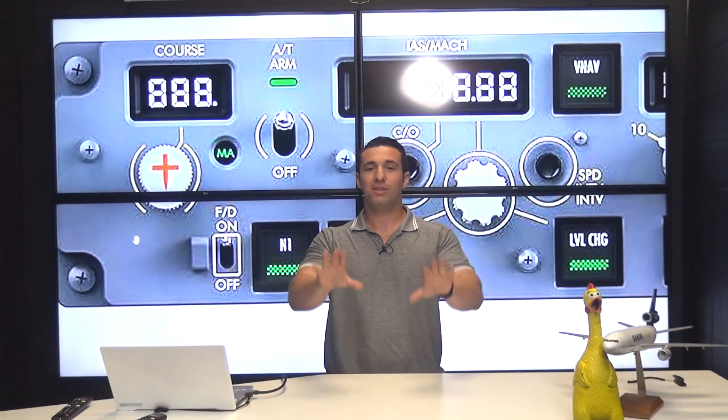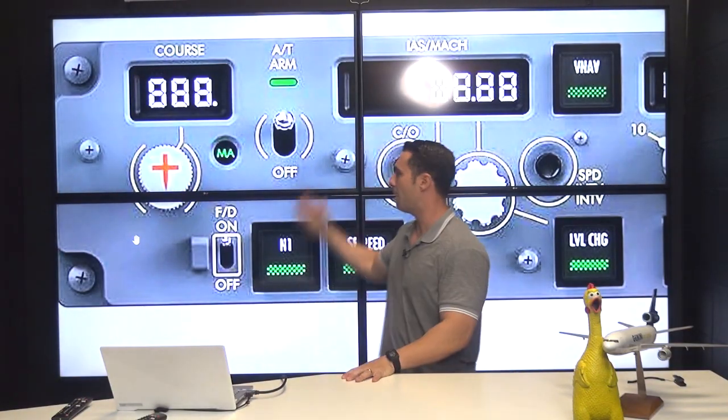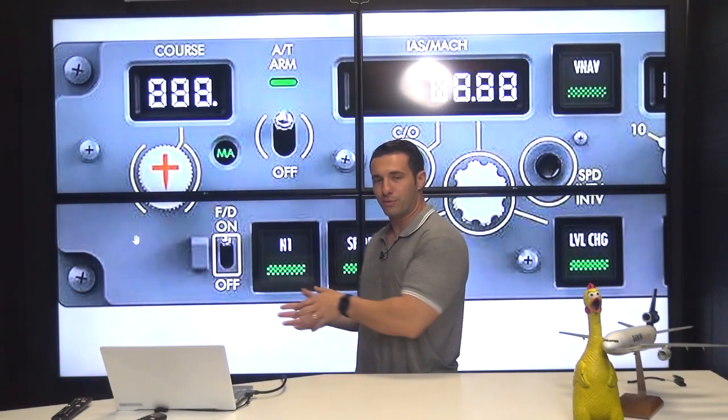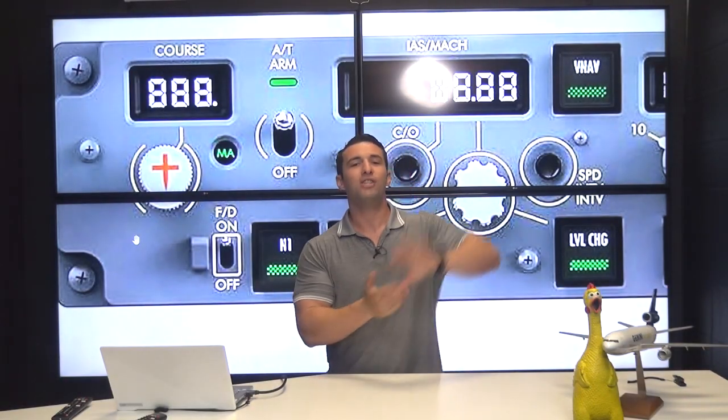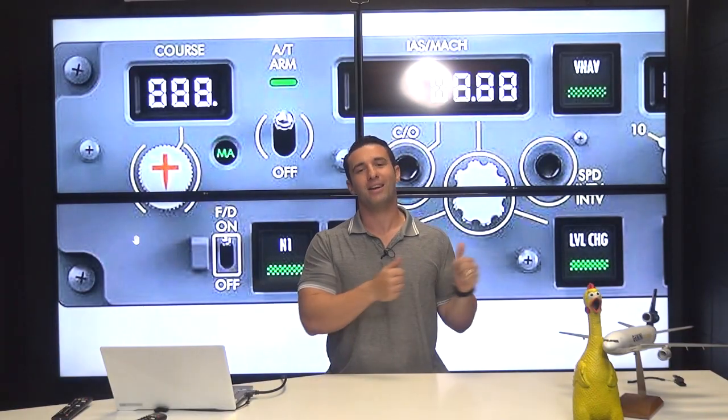The master flight director is whoever turned on their flight director first. And that assumes the autopilot's off. Typically we put the flight directors on as part of our pre-flight flight deck setup at the gate and whoever's going to be the pilot flying for the day will turn on their flight director first to ensure they become the master. But the reality of it is, is that the master flight director will remain the master flight director as long as we don't engage the opposite autopilot because the flight director is also slaved to the active autopilot.